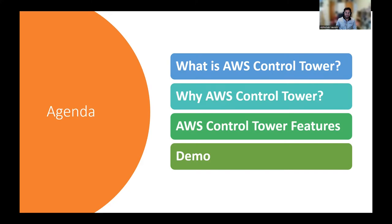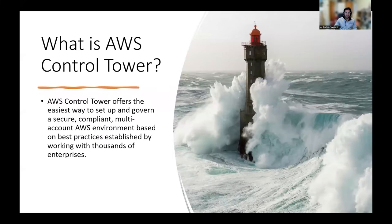Let's dive into the first part of our presentation to answer the question: what is AWS Control Tower service? AWS Control Tower, by definition, is a service that allows you to set up and govern a secure and compliant multi-account AWS environment. The question is, why do you need a multi-account environment in the first place? You can run and manage your workloads in a single AWS account. However, having multiple AWS accounts helps isolate and manage your business applications and data effectively.